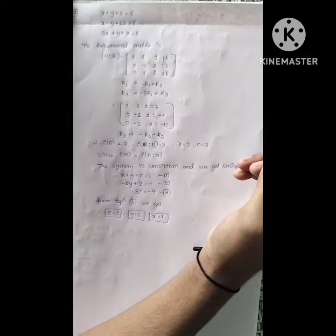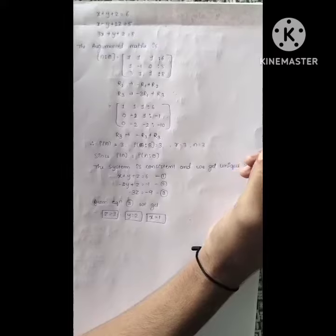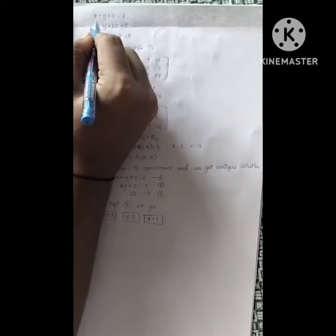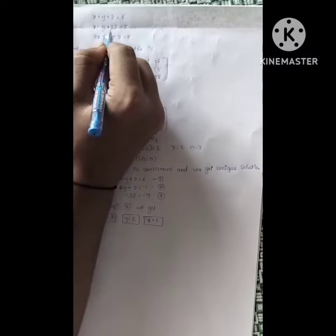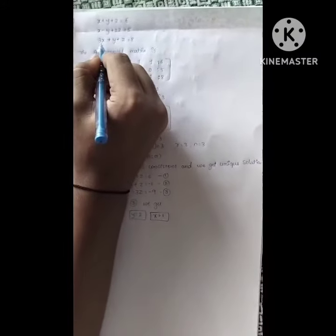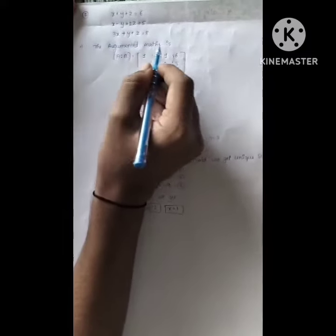Hello everyone, in this video we will learn about test matrix consistency. The given equations are x plus y plus z equal to 6, x minus y plus 2z equal to 5, and the third equation is 3x plus y plus z equal to 8.